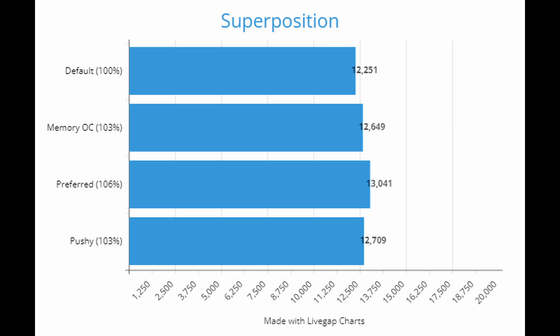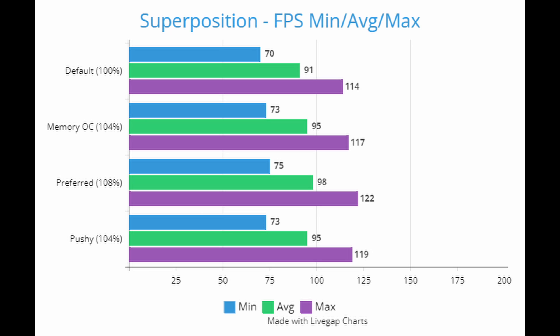Superposition also gives you good data on FPS numbers during the test. The default had an average of 91 FPS with a high of 114 and a low of 70. The memory overclock — and I'm still pretty impressed at the difference just the memory overclock makes — gave an average of 95, max of 117, and a low of 73 for a 4% performance increase. The preferred settings again ended up being the best: 98 FPS average, 122 max, 75 minimum. And Pushy was very similar to the memory overclock at 95 FPS average, 119 max, and 73 minimum.